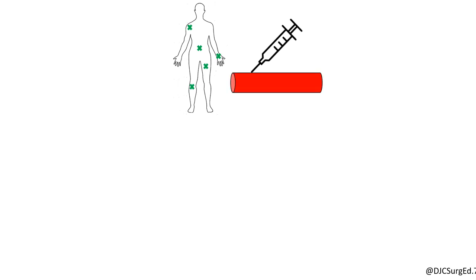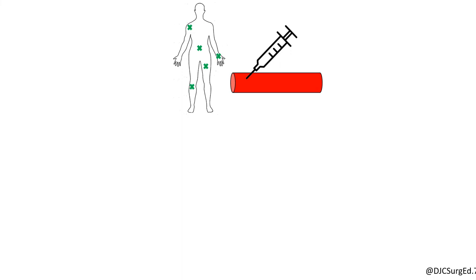Toxicity depends on the site of injection and the speed of absorption, with inadvertent intravascular injection producing toxicity at smaller doses. Symptoms include both central nervous system and cardiovascular effects.